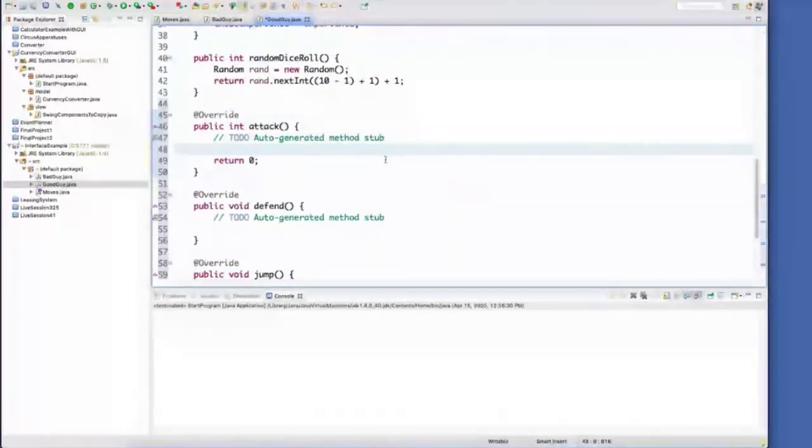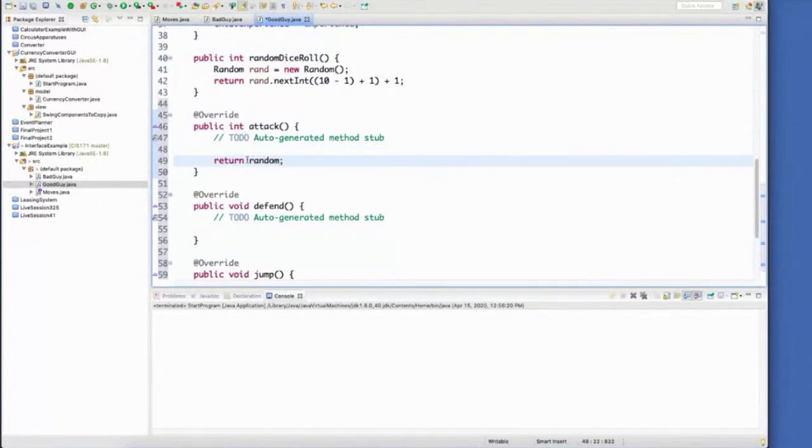And I could do that just by typing inside of here. Right now, the return is zero. So maybe I do instead, I do a return a random dice roll.